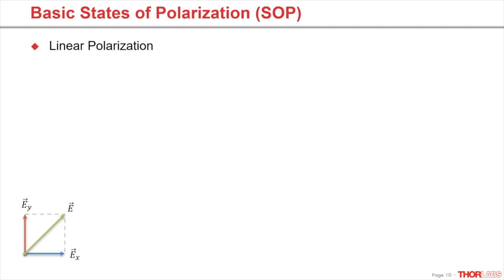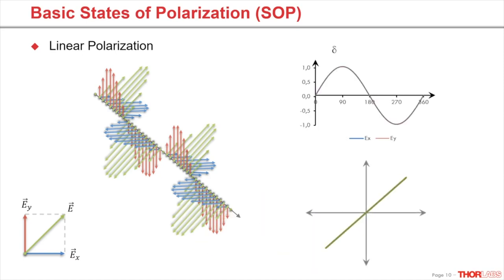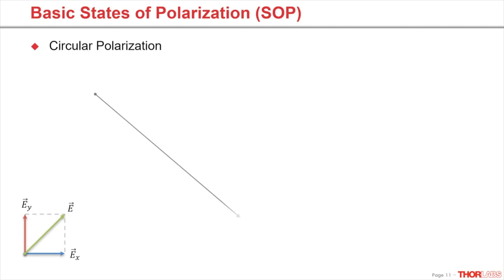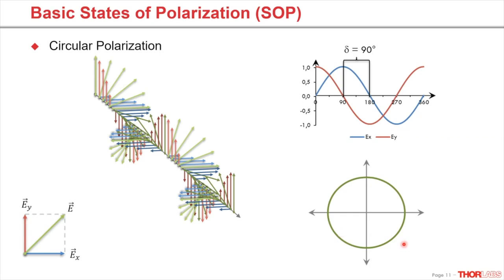The first special case arises when the X and Y components don't show a phase difference. The resulting vector has an oscillation along a constantly tilted plane. In the observation plane, the electric field vector describes a line. When X and Y oscillation have the same magnitude, we speak of a linear 45 degree polarization. The second special case is given at a phase difference of 90 degrees. When X and Y fields have the same amplitude, the field vector describes a circle. In that case, we talk about circular polarization.